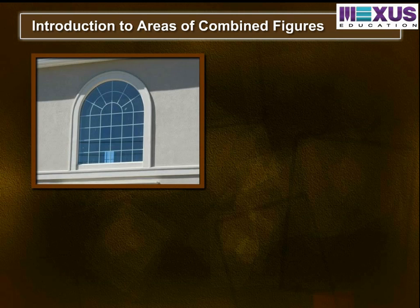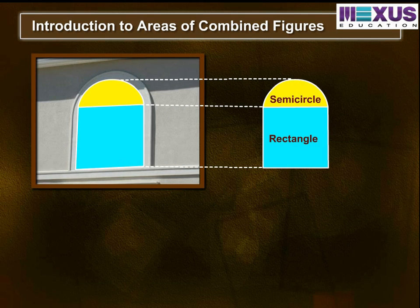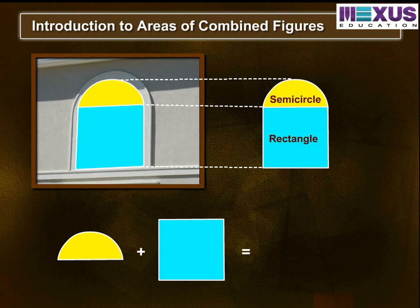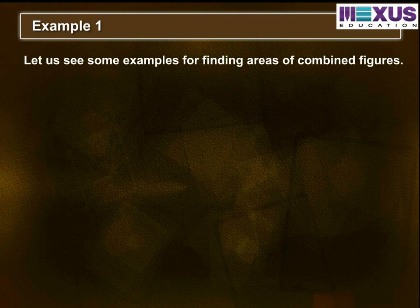For example, if a tailor wants to make a curtain for a window, he has to find the area of the window for measurement of the cloth required for the curtains. So he divided the window into two basic shapes — Semi-Circle and Rectangle — and finds the area of each, then adds their areas to find the amount of cloth required. Similarly, any combined figure can be separated into basic shapes, and their areas can be calculated. Let us see some examples for finding areas of combined figures.